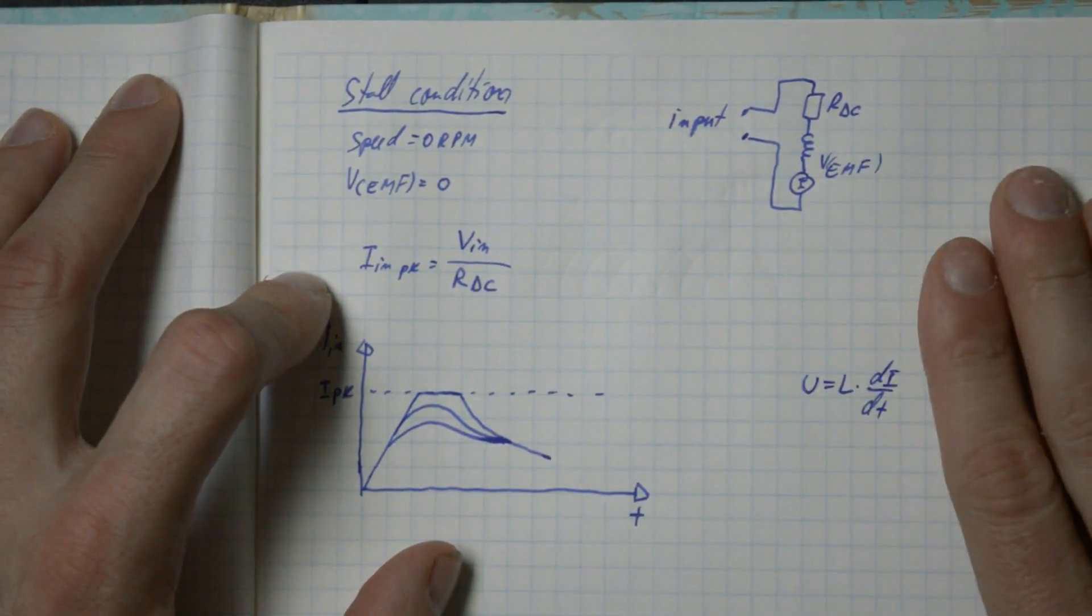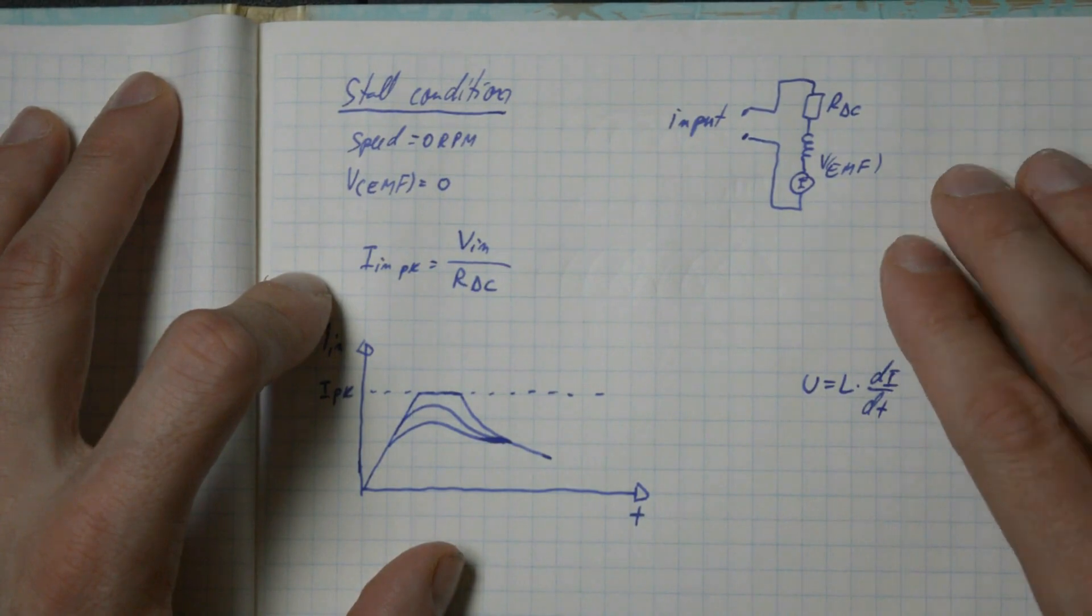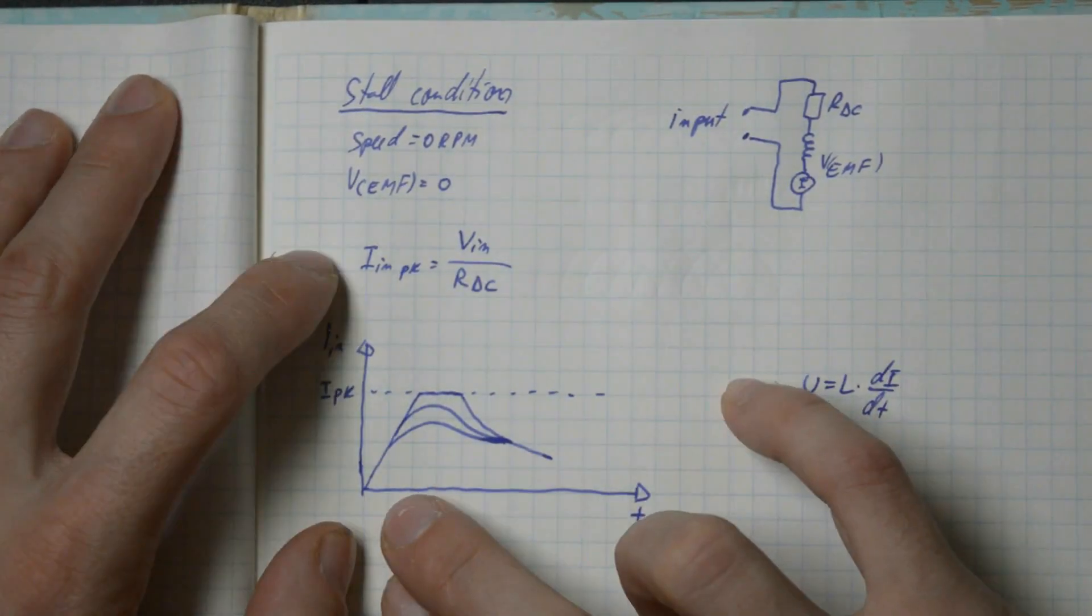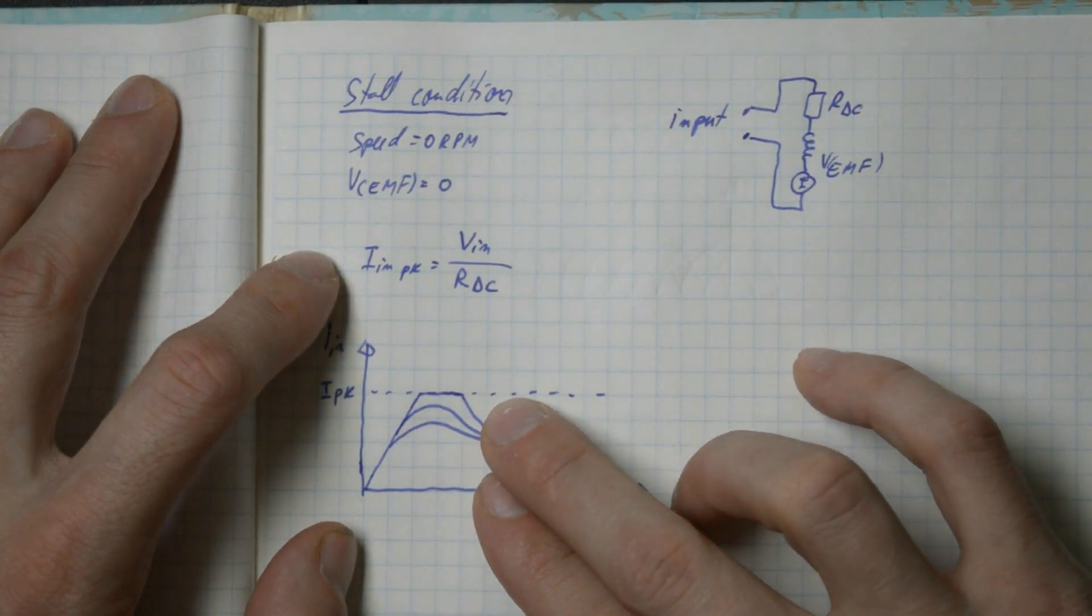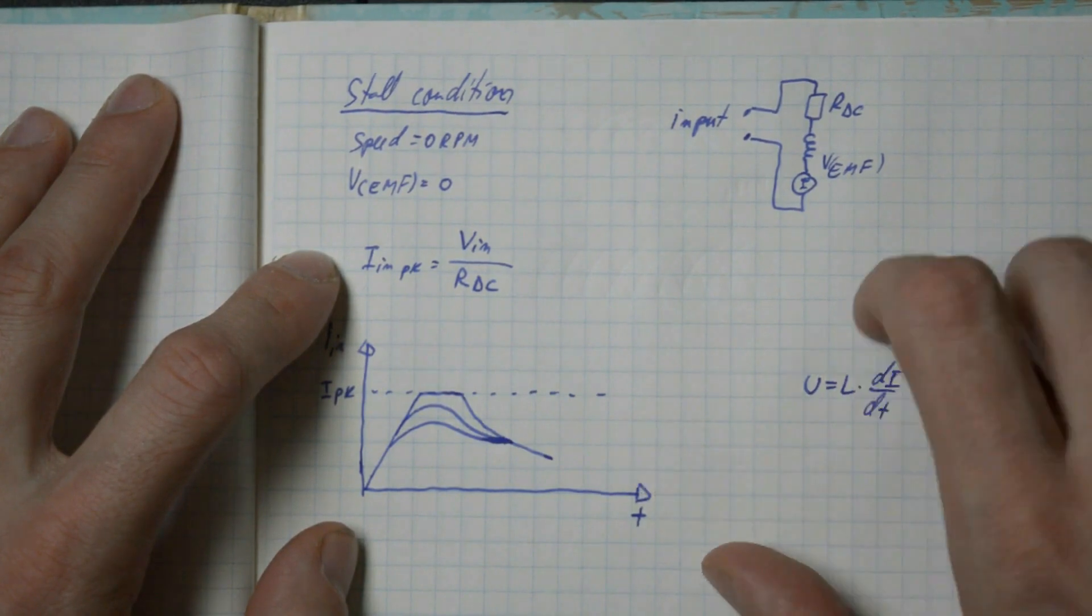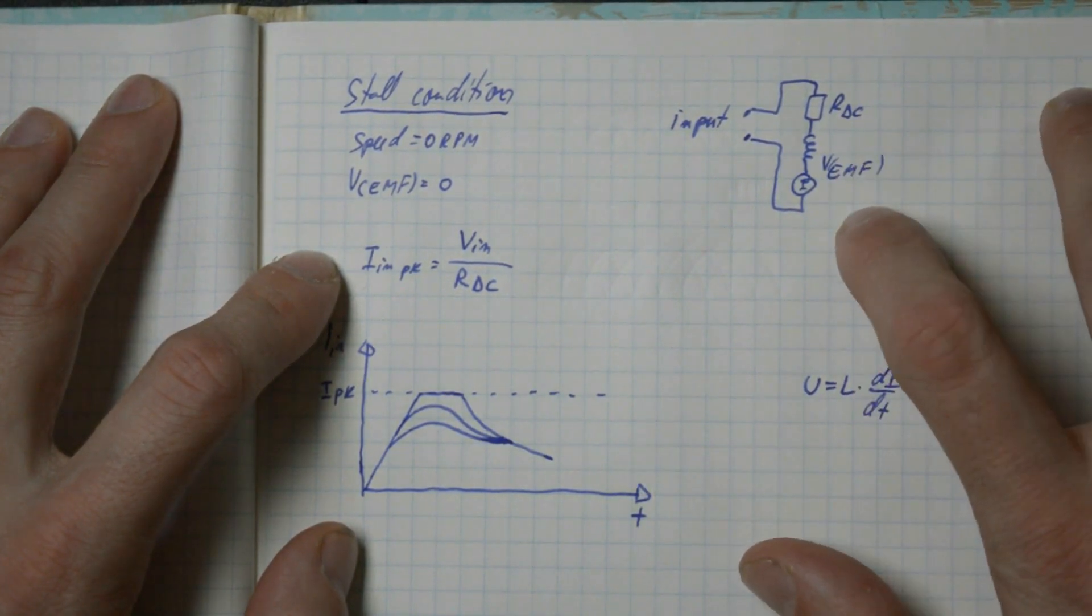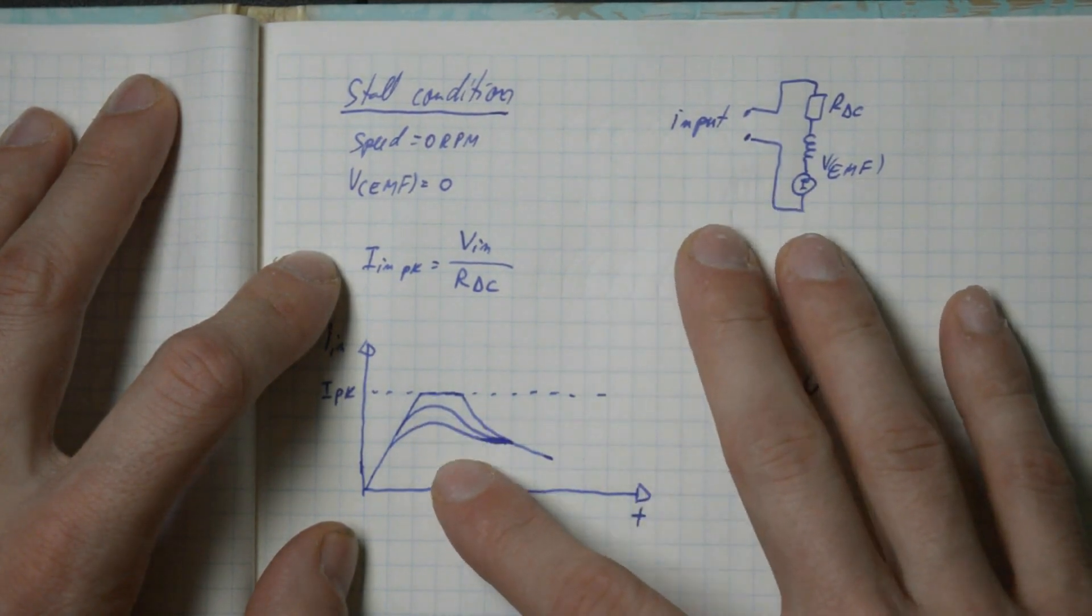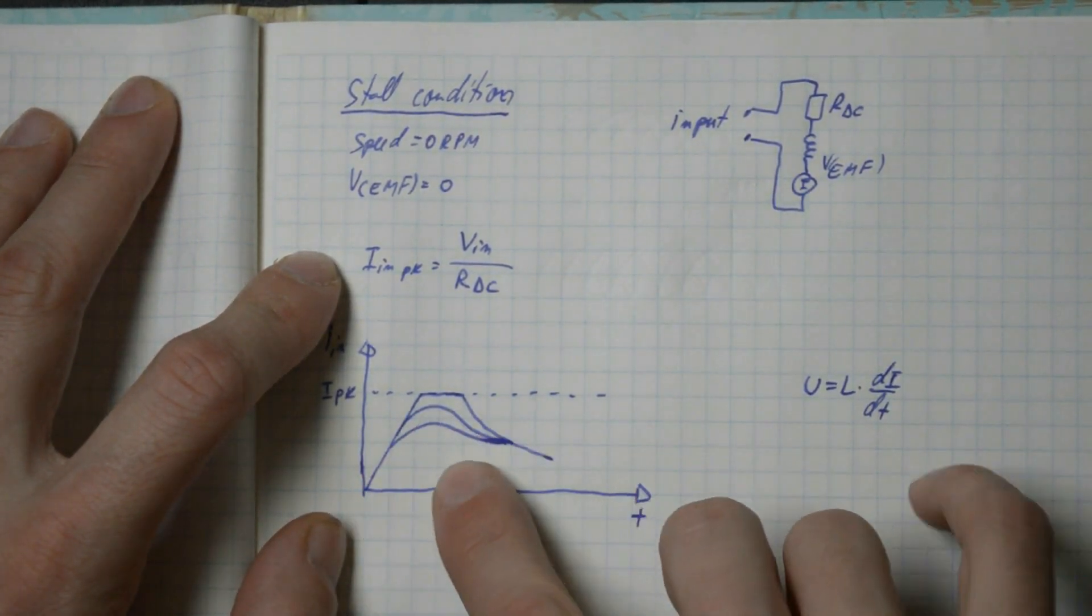Nothing else stands in the path of the current. Now, during startup, if the motor will start slow enough, our current will actually reach this peak current. Once the motor starts turning, the current will drop down since our EMF voltage will start to rise. On the other hand, if our motor turns on much faster, then we will not reach this current. So we will be on one of these lower curves.